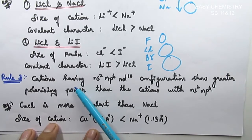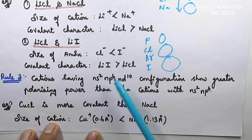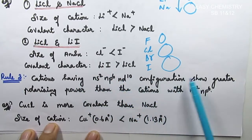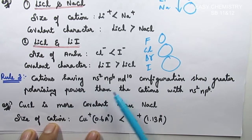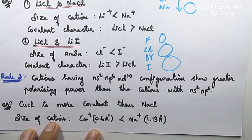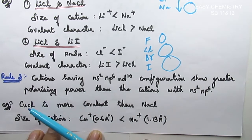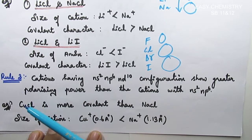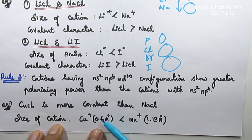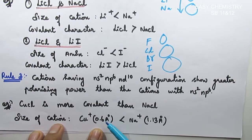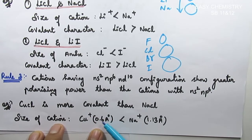Rule 3: cations having an ns²np⁶nd¹⁰ configuration have greater polarizing power than cations with only ns²np⁶ configuration. For example, CuCl is more covalent than NaCl. Cu⁺ has a size of about 0.6 Ångström, and its electronic configuration gives it greater polarizing ability, resulting in greater covalent character.